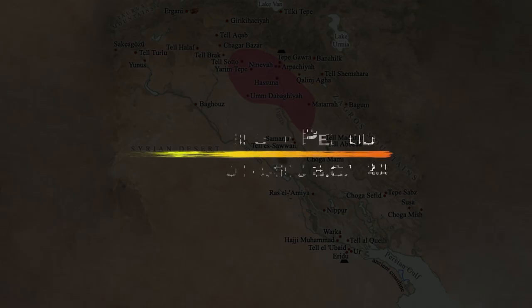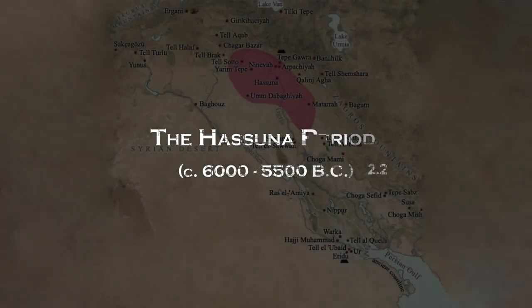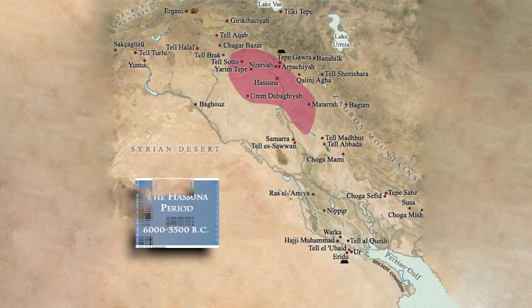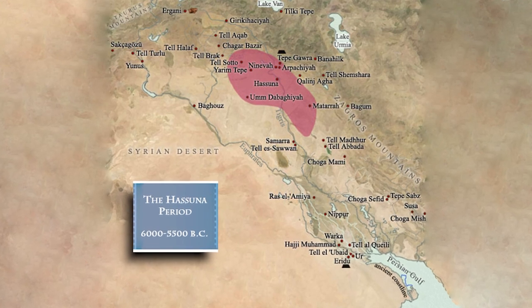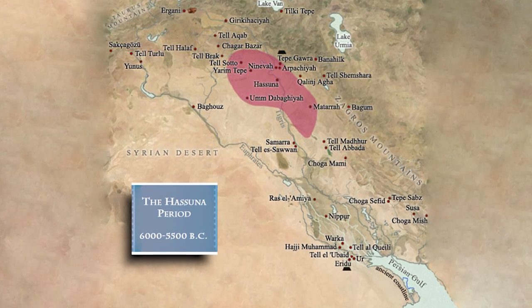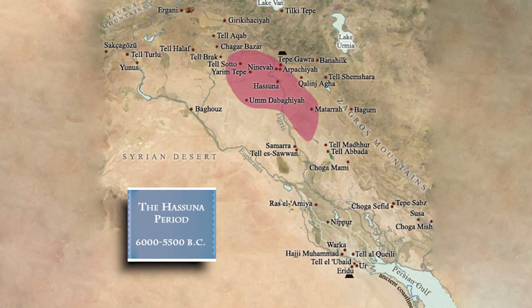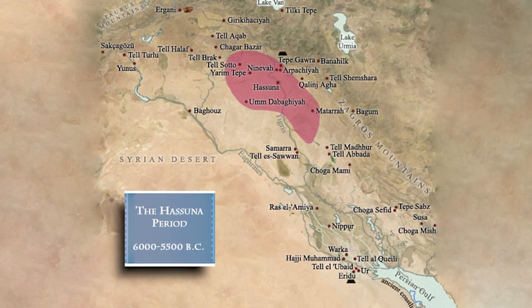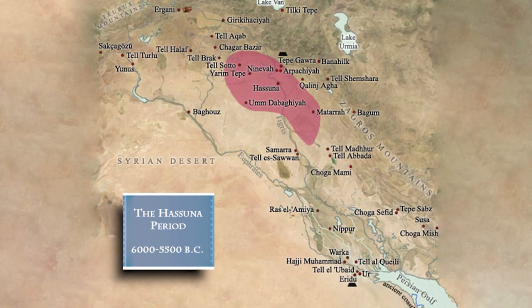The Hasuna Period. The earliest cultures in northern Mesopotamia were the Hasuna people, who thrived from 6,000 to 5,500 BC. They inhabited the foothills of northernmost Mesopotamia, situated a few kilometers south of Nineveh, and extended eastwards towards the base of the Zagros Mountains. In these regions, the rainfall was adequate to support dry agriculture in certain areas, making the Hasuna people the first farmers in northern Mesopotamia.